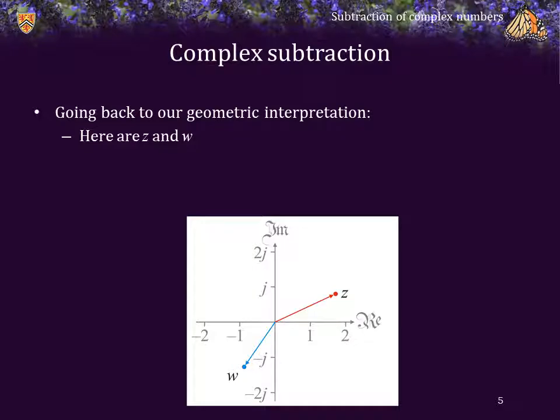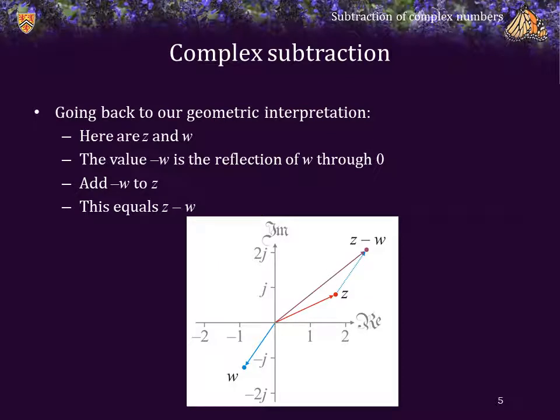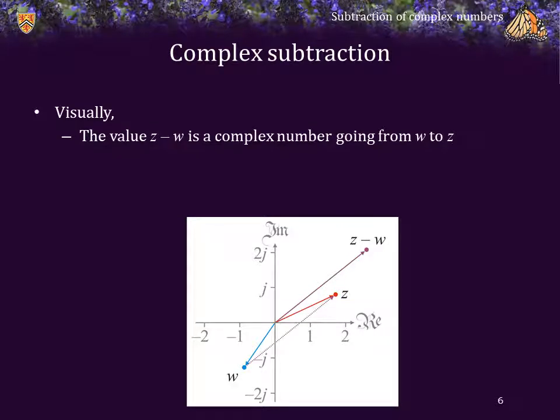Let's go back to our geometric interpretation of complex numbers. Here we see two complex numbers, z and w, in the complex plane. The value negative w is a reflection of w through zero. We now add negative w onto z, and this produces the result z minus w. You can also see visually that z minus w is essentially the complex number going from w to z.